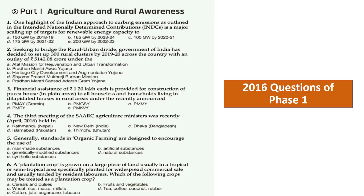To get a better understanding, let us look at actual questions from the 2016 Phase 1 exam. One question was related to the Intended Nationally Determined Contributions — again, current affairs. There were also two questions related to schemes, a general question on when and where the third meeting of SAARC agriculture ministers was held, and a question on organic farming and plantation crops. These were generalized questions that did not go deep into agriculture concepts.